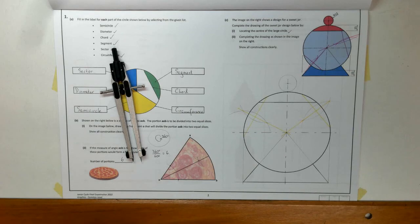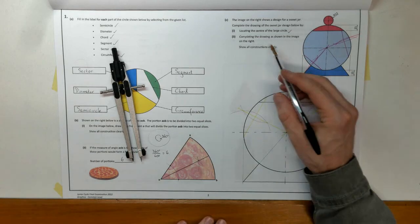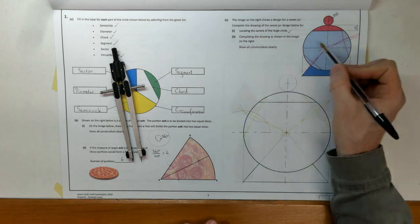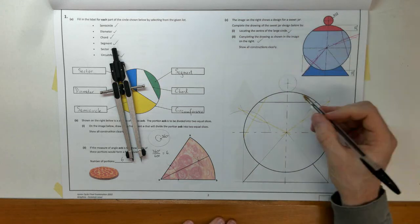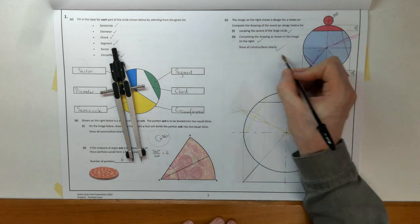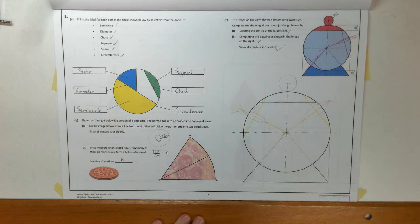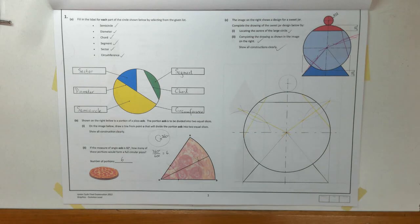So, that is my sweet jar. I think I've got everything there. And just always go back and see. We've ticked that off. We've shown all constructions. And there's nothing there about adding colour or rendering. So, we don't have to. Always go back and check that because it's easy marks that you can pick up. So, that was question one of the 2022 paper.